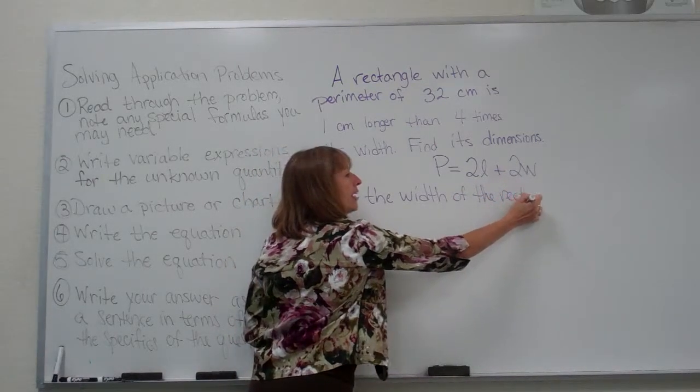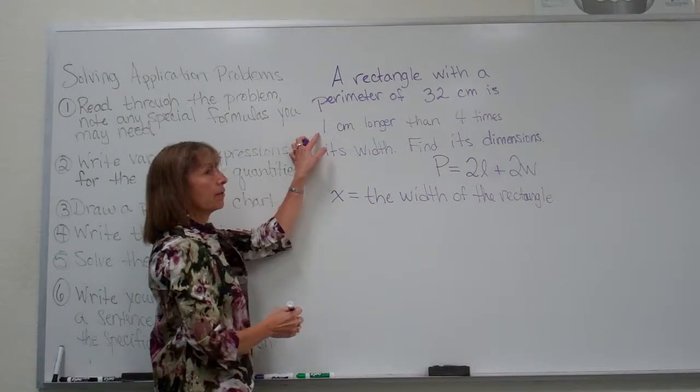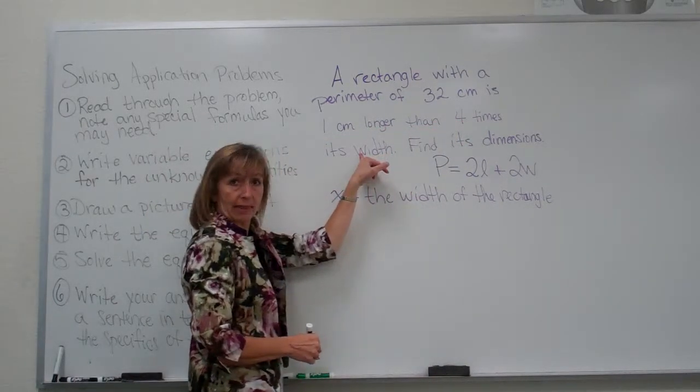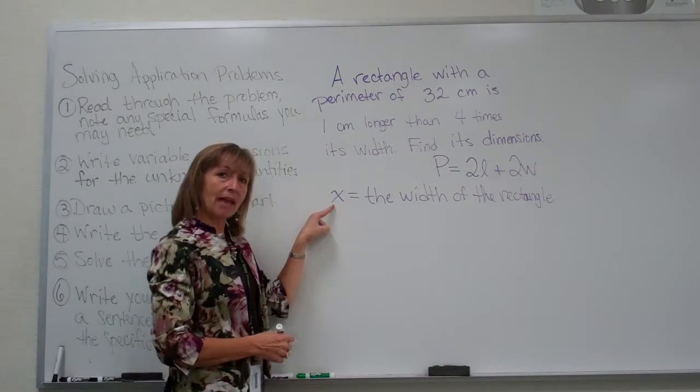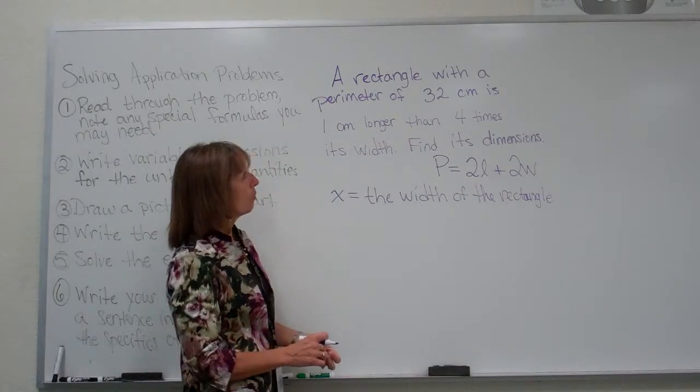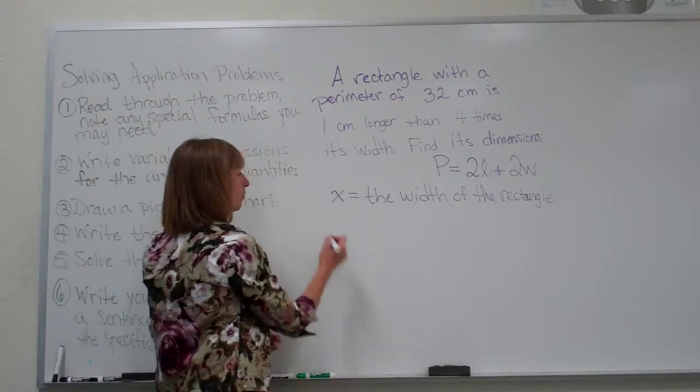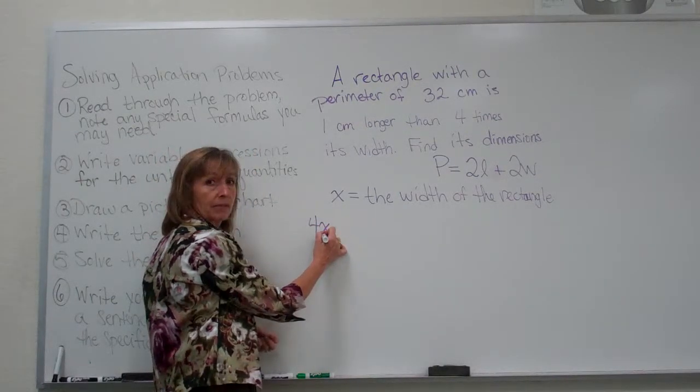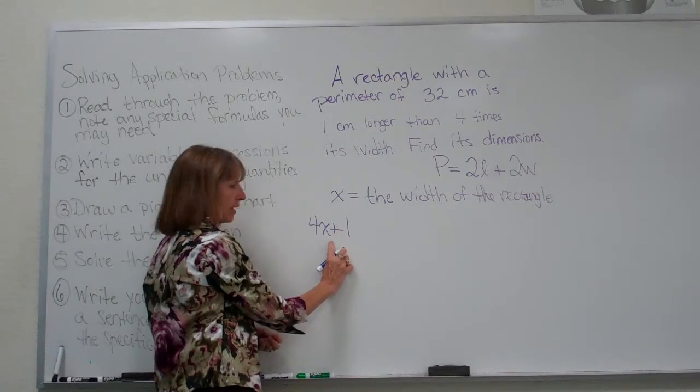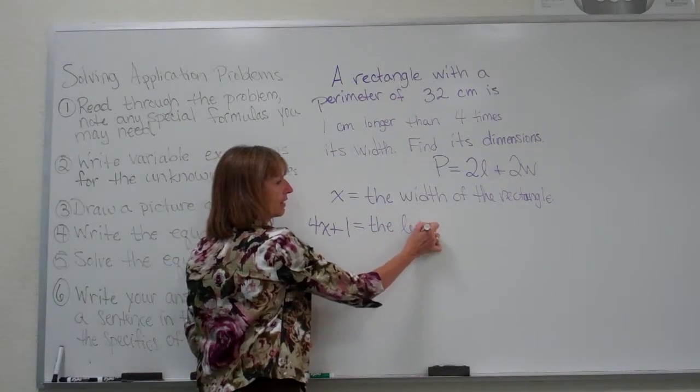So then next, we read again that it says that that rectangle is one centimeter longer than four times its width. Well, if its width is represented with x, and I want to represent now one more than, longer than four times its width, that would be four times x, that's four times its width, plus one. One centimeter longer than four times its width. And that represents the length of the rectangle.